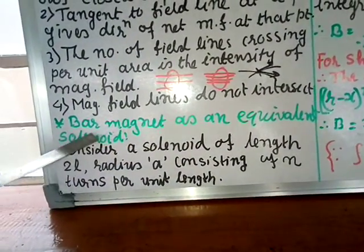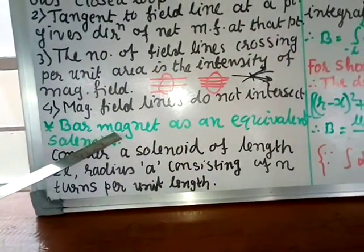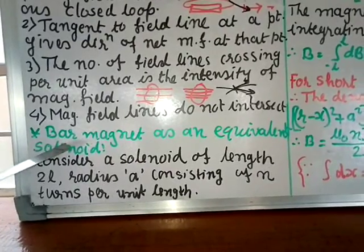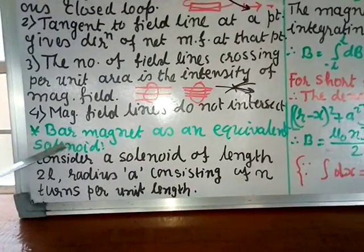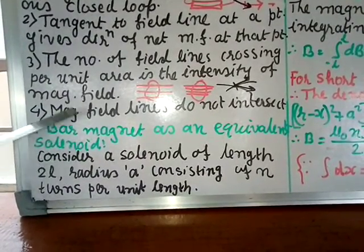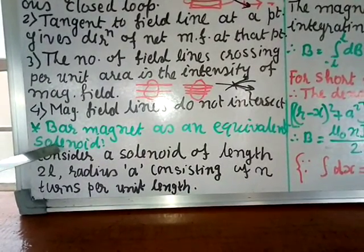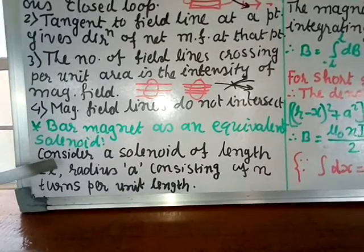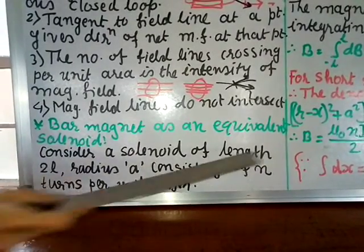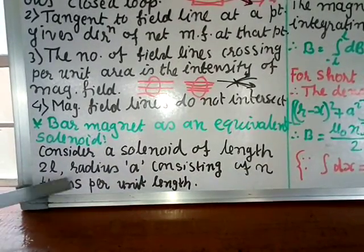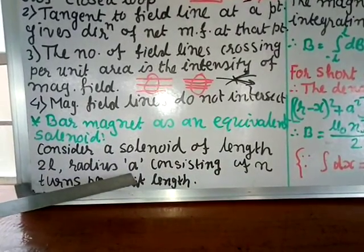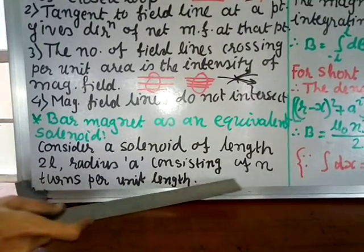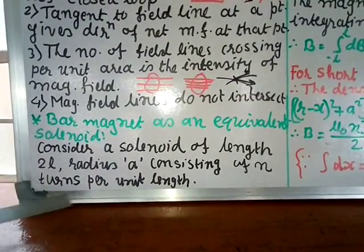We have to show that a bar magnet and a solenoid have the same magnetism — that they behave the same way. Consider a solenoid of length 2l and radius a, consisting of n number of turns per unit length.